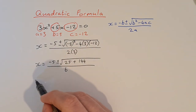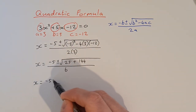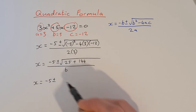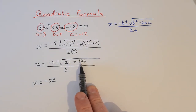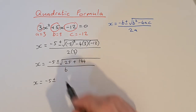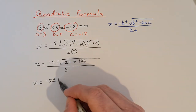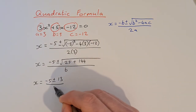So x equals minus 5 plus and minus — 25 plus 144 is 169, and the square root of 169 is 13. So that works out nicely, all over 6.